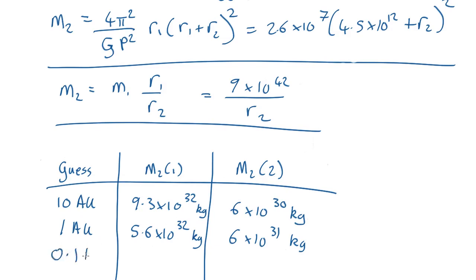So if you drop down to 0.1 astronomical units, once again you plug the numbers, you take 0.1 astronomical units and plug it into here and into there. This comes out as 5.3 by 10 to the 32 kilograms and this comes out as 6 by 10 to the 32 kilograms.